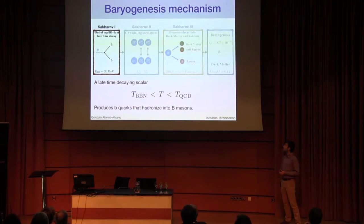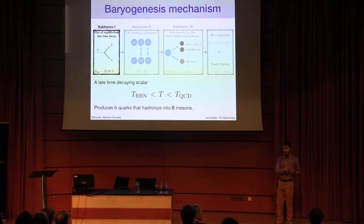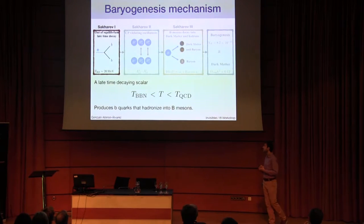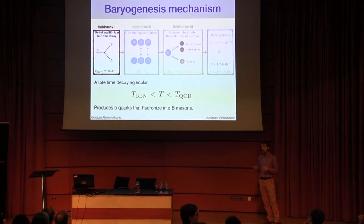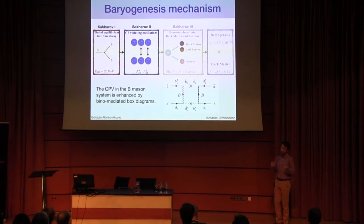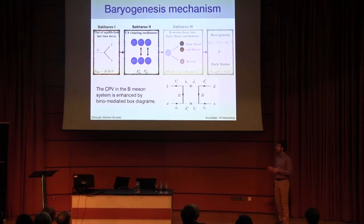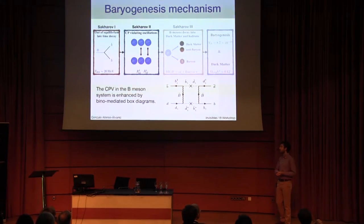Let me go through the steps of the baryogenesis scenario with a focus on how the Sakharov conditions are satisfied. The first one — departure from equilibrium — is achieved by assuming there's a scalar which decays late enough and produces b quarks between the QCD phase transition and BBN. These b quarks hadronize into B mesons. The neutral B mesons produced this way perform particle-antiparticle oscillations in a flavor-violating and CP-violating way, and that's how we get the second Sakharov condition. The light bino enhances the CP violation by means of box diagrams, very similar to the Standard Model ones.